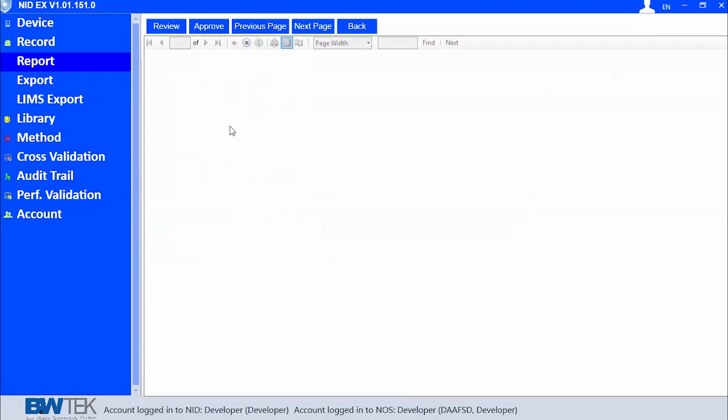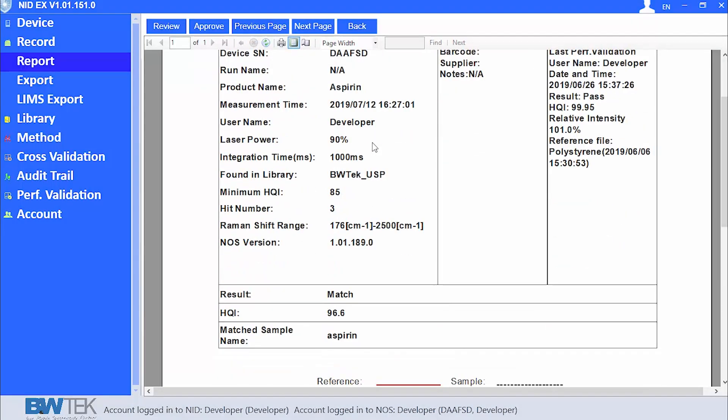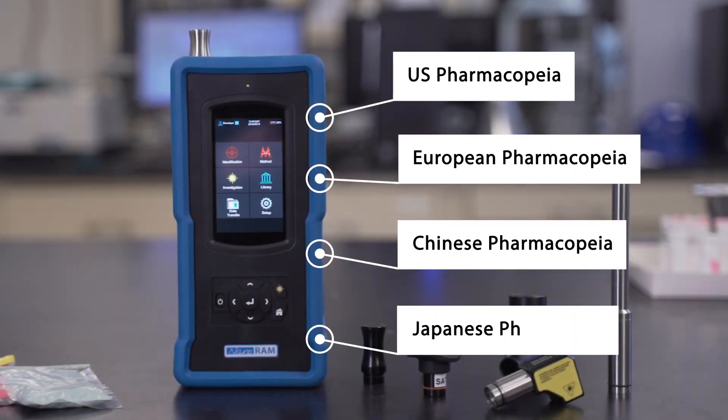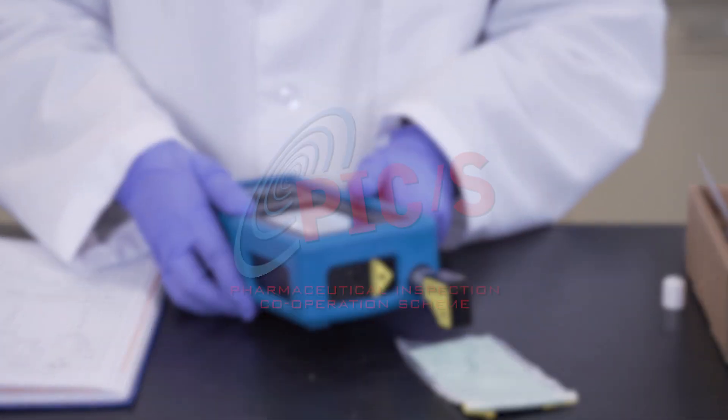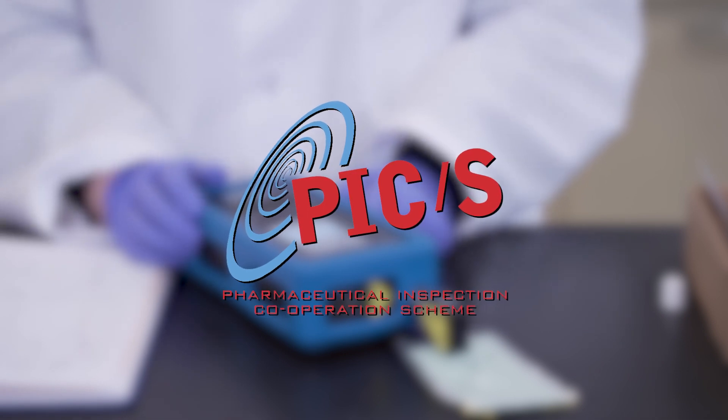The NanoRAM 1064 is 21 CFR Part 11 compliant and fulfills the requirements of the US, European, Chinese, and Japanese pharmacopeias for Raman spectroscopy. It also allows companies to comply with PICS initiatives for 100% incoming raw material testing.